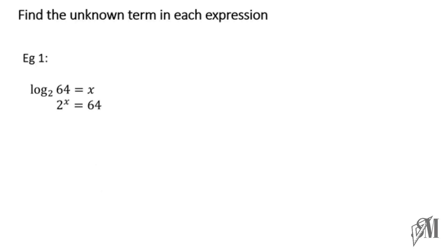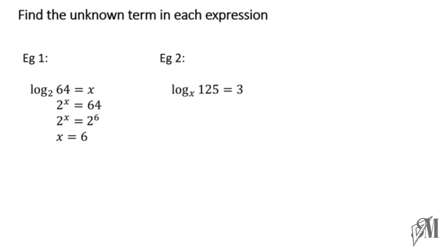So this gives us 2 to the power x is equal to 64. The next step is to write 64 as a power of 2, because once the bases are equal we can equate the powers. 64 is 2 to the power 6, and since both sides have base 2, we can equate the indices: x is equal to 6.